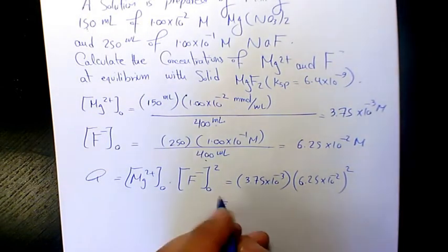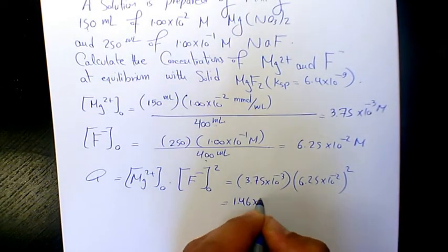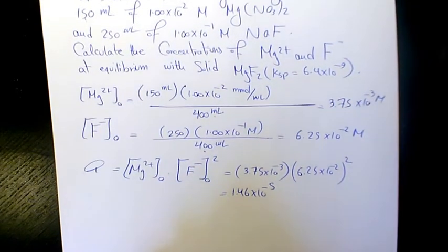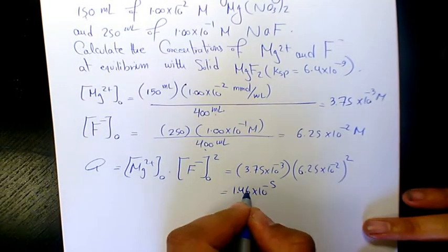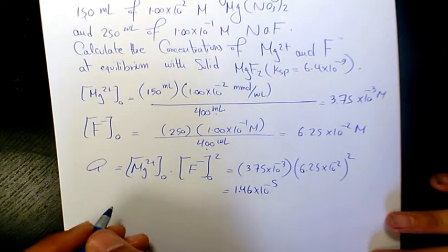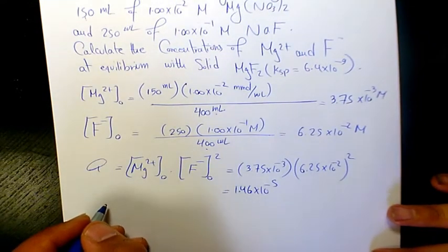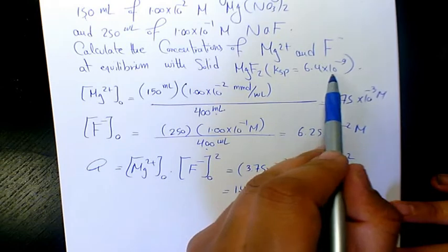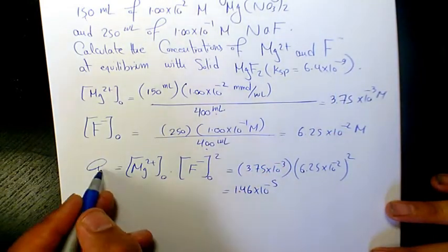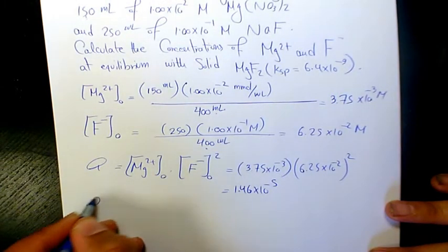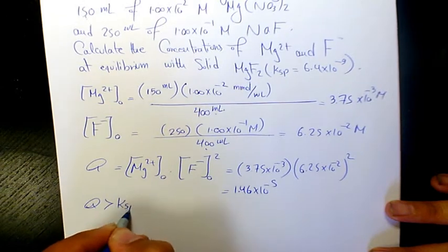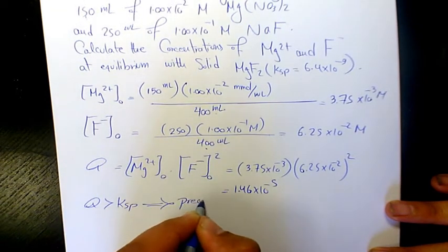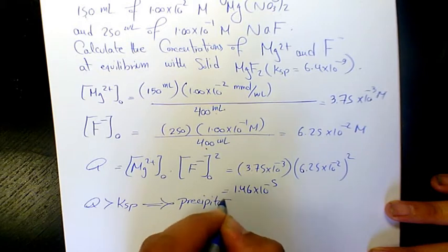That gives Q equal to 1.46×10⁻⁵. Ksp is 6.4×10⁻⁹, and obviously Q is greater than Ksp, so we have precipitation and a precipitate forms.